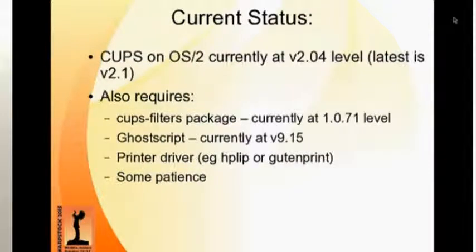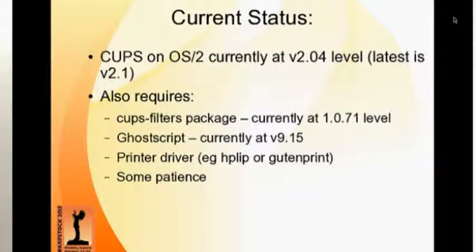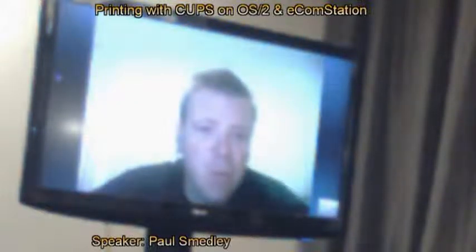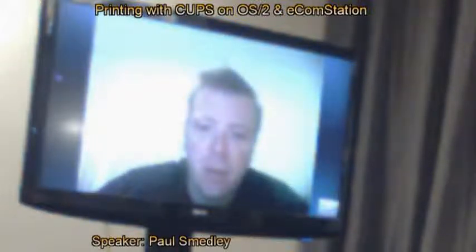Currently, I have a build of CUPS 2.04 — it's in a thread on OS/2 World, I'll link to it. CUPS 2.1 I haven't got around to building yet — it's been pretty crazy busy recently. There's a CUPS filters package currently at version 0.71, probably a few points behind the latest release. GhostScript current build is at 9.15. For a printer driver you need HP Lib for HP printers, or most other printers would use Gutenprint. And some patience — it does take a little bit of work to configure, which is one of the current barriers to more widespread adoption of CUPS on OS/2.